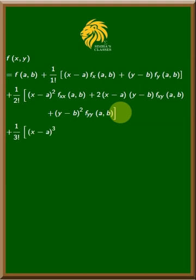plus 1 by 3 factorial into x minus a the whole cube into f triple x of AB plus 3 into x minus a the whole square into y minus b